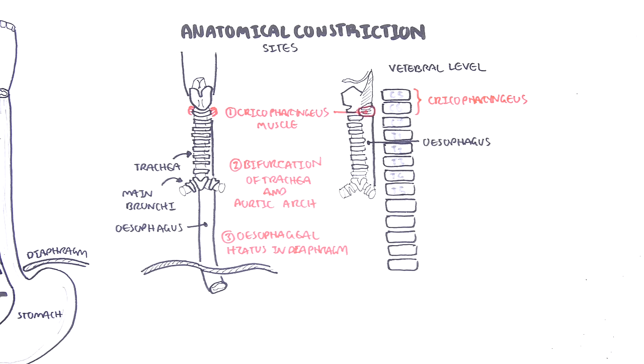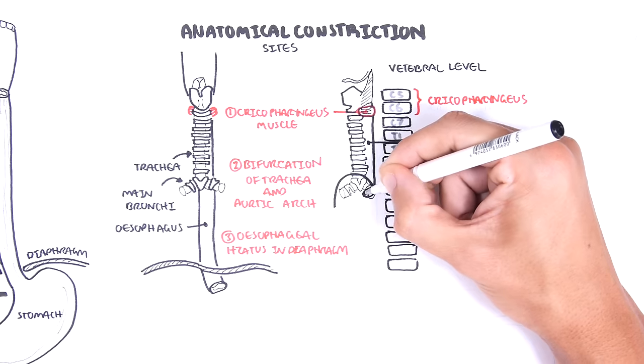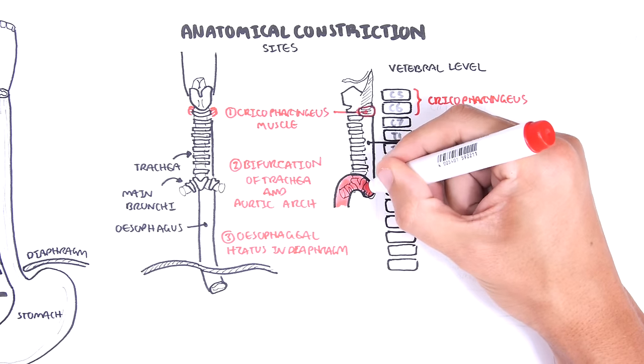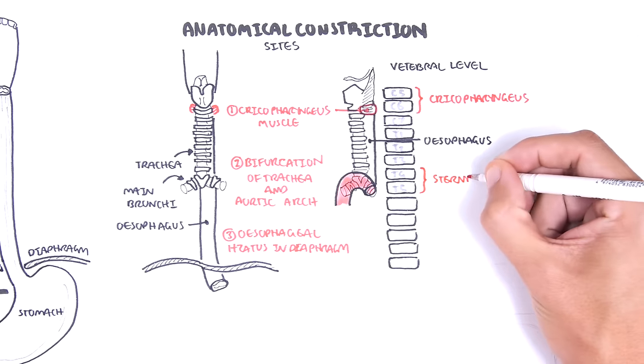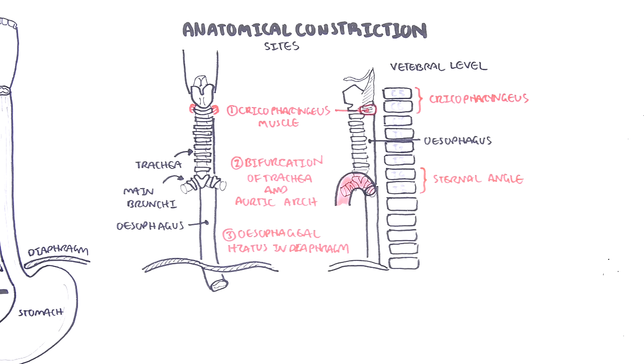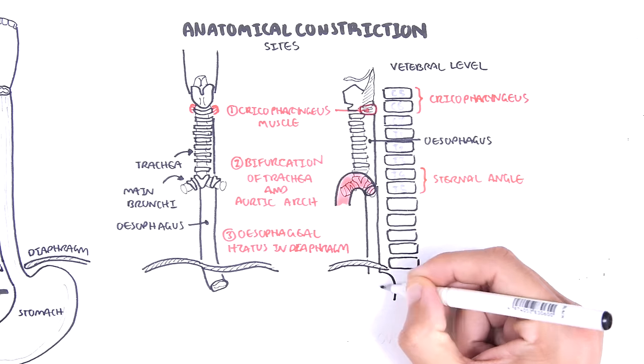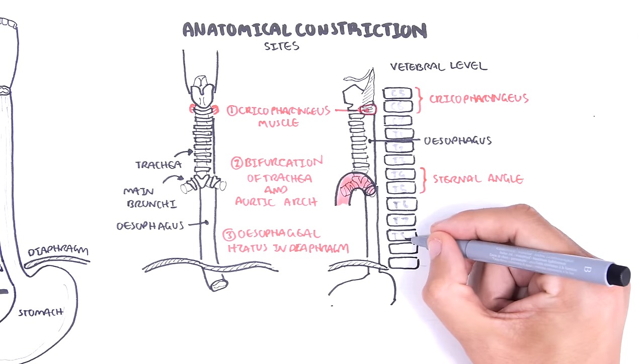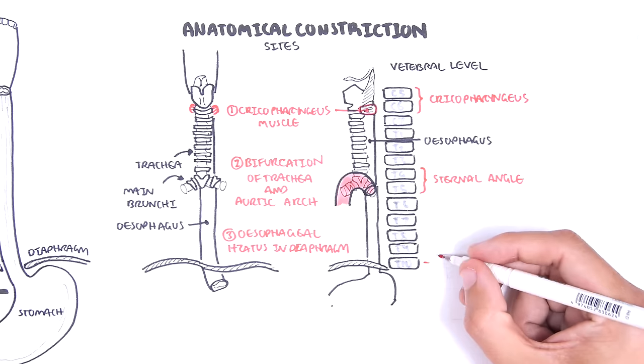The bifurcation of the trachea and where the aortic arch is located is at the level of the sternal angle, roughly between T4 and T5 vertebral level. The last anatomical constriction site is where the esophagus passes through the diaphragm at level T10.